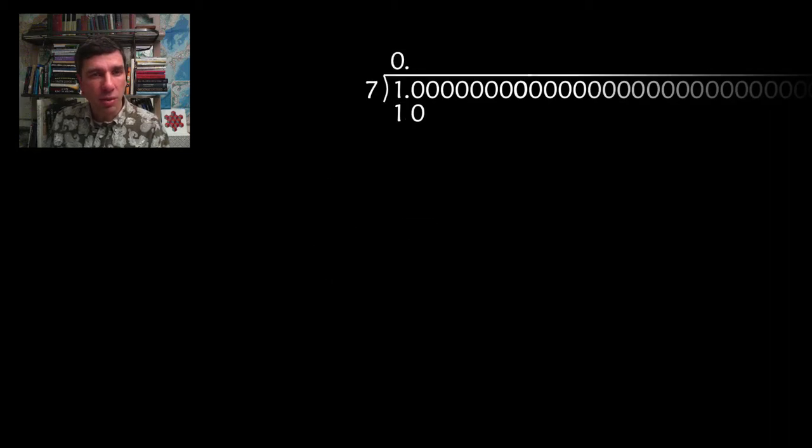So, how do we proceed? Well, we have to figure out how many times 7 goes into 10, just once. Then we have to figure out the difference, 10 minus 7, that's 3. So, how many times does 7 go into 30? That's 28, so that's 4 times. Subtracting, 30 minus 28 is 2. And I can keep on going in this way, doing long division.